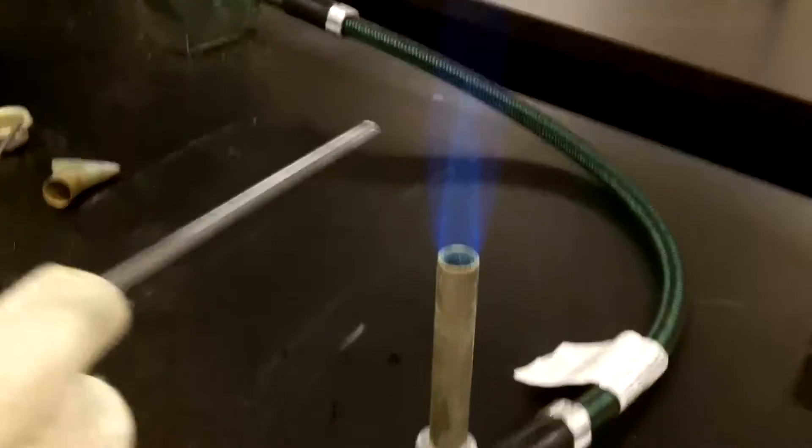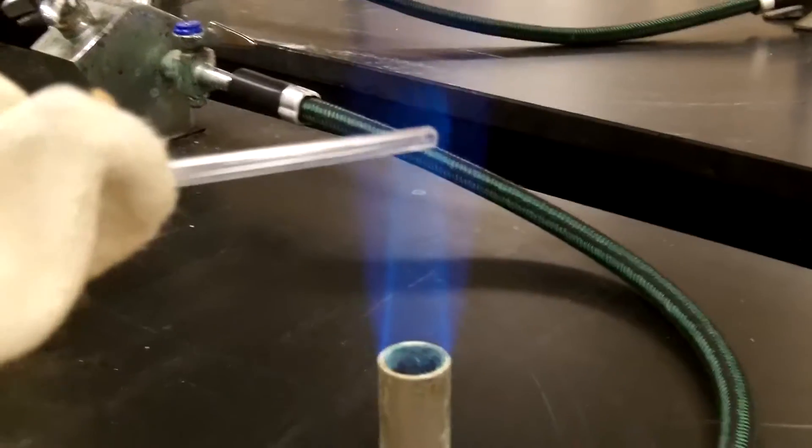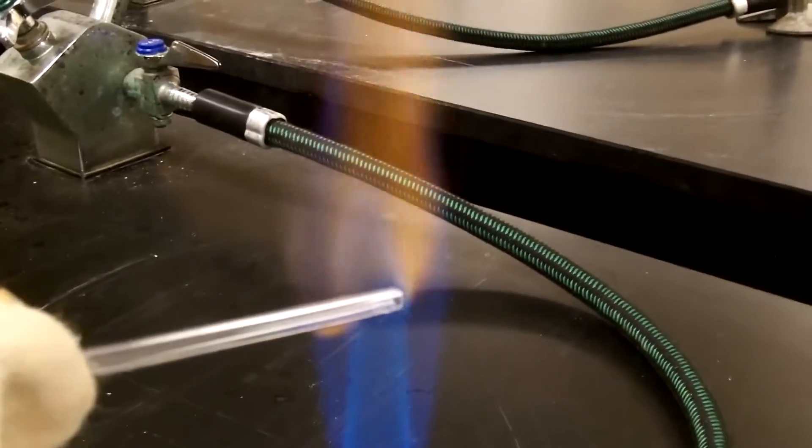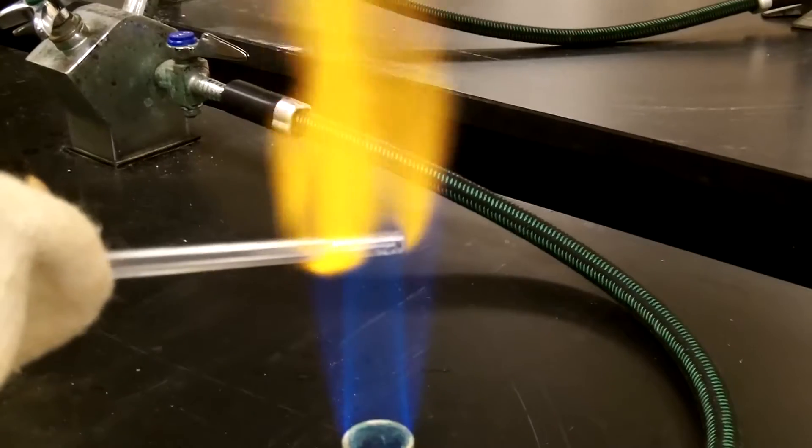Now, pick up your glass tubing and put the tip on the inner cone of the flame where it is the hottest. Rotate it slowly to get all sides heated evenly in the flame. When it is done, you will see that the end looks polished and clean.